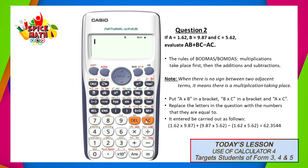The first step in solving such a question would be to identify how you would enter the set of operations into the calculator. In this question, the rules of BODMAS stipulate that the multiplications take place first, followed by the additions and subtractions. Also, note that when there is no sign between two adjacent terms, it implies that there is a multiplication taking place. To enter this, we would put A times B in a bracket in the place of AB, plus B times C in a bracket in the place of BC, minus A times C in a bracket in the place of AC. In order to evaluate this question, we must substitute the numbers in for the letters.